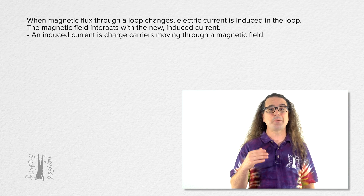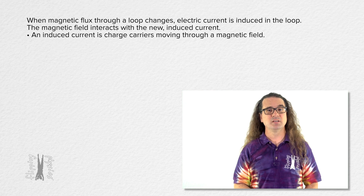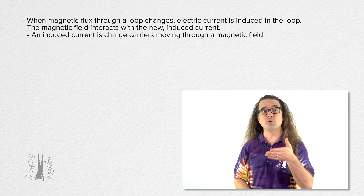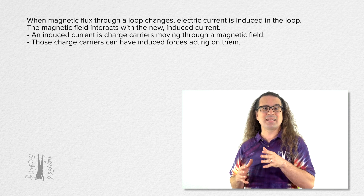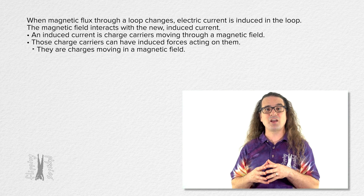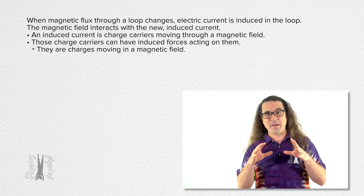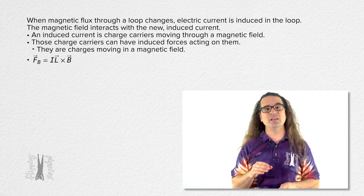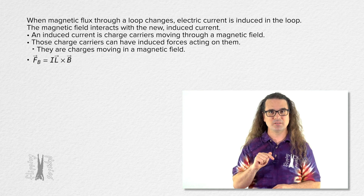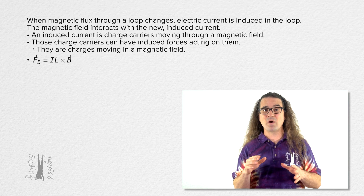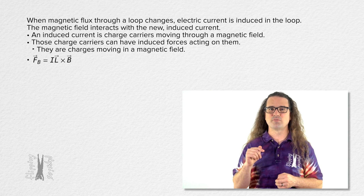An induced current is a bunch of charge carriers which are moving in a magnetic field. That induced current — those moving charges — can also have induced forces acting on them as a result of the fact that they are charges moving in a magnetic field. The magnetic force on a current-carrying wire equals the cross product of current times the length vector of the wire and the magnetic field. This equation is for when the current is constant, the wire is straight, and the magnetic field is uniform and constant.